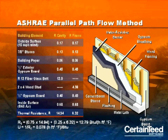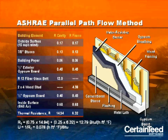The parallel path flow method is a little more complicated. Two different heat flow paths exist in an insulated wood frame assembly: the cavity path and the wood frame path. Thermal resistance for each path is calculated and combined, giving proportional weight to each path. In this wall, the combined R-value is 12.79. The ASHRAE manual contains detailed information for making calculations.